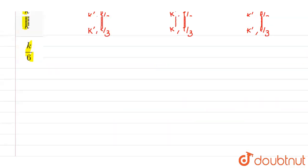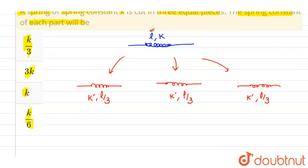We know that for a particular spring, the product of force constant into its length is always constant. The product of spring constant of the spring into its length is always constant.